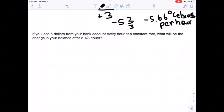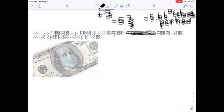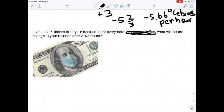Our final problem here today, we have, if you lose $5 from your bank account every hour at a constant. So what will be the change in your balance after two and one third hours? So you lose $5, negative 5 every hour, and then you do this for two and one third hours, but two and one third is really just seven thirds as a fraction. So we multiply this.